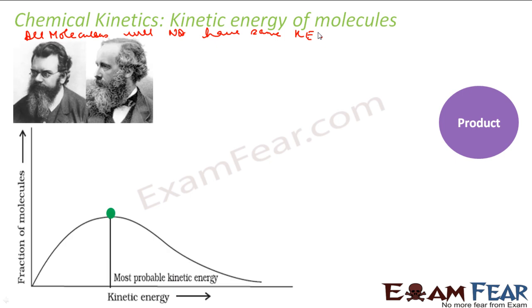What happened is these two scientists, Ludwig Boltzmann and James Clark Maxwell, used statistics to predict the behavior of a large number of molecules. With this, they described the distribution of kinetic energy. Because it is very difficult to predict the behavior of one molecule with precision, they talked about distribution.